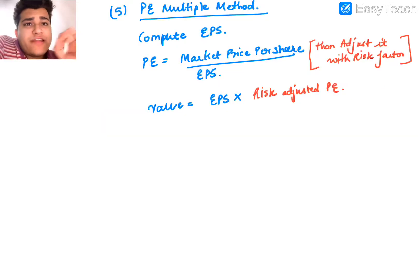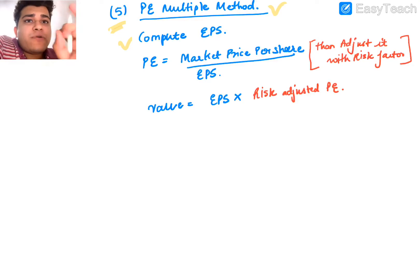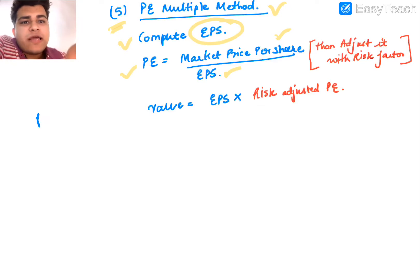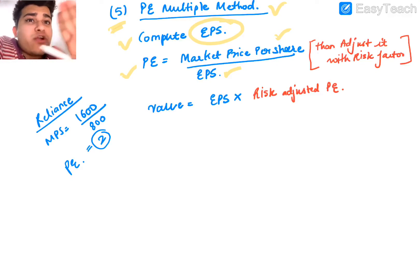The fifth method is the PE multiple method. Step one: compute earnings per share (EPS) = earnings of the company divided by number of shares. Step two: PE ratio = market price divided by EPS. For example, if Reliance has a market price of ₹1,600 and EPS of ₹800, then PE = 2. This means we require two years of earnings to cover the market price of the share.